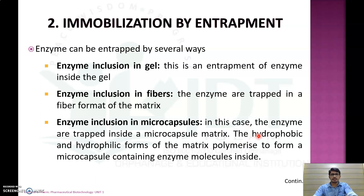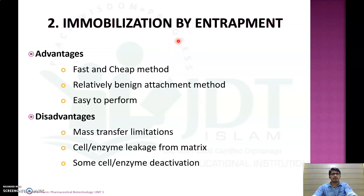In enzyme inclusion in microcapsule, the enzymes are trapped in a microcapsule matrix, and the hydrophobic and hydrophilic forms of matrix polymerize to form the microcapsule containing enzyme molecules inside. Advantages of the entrapment method: it is a fast and cheap method, a relatively benign attachment method, and very easy to perform. Disadvantages include mass transfer limitation, chance of cell or enzyme leakage from the matrix, and some cell or enzyme may get deactivated.